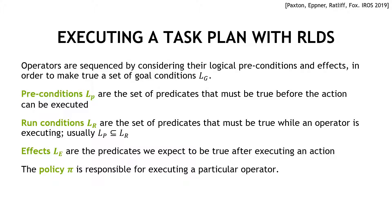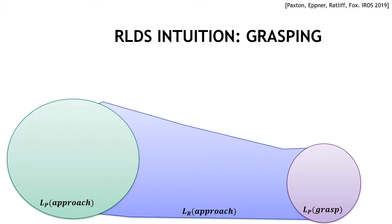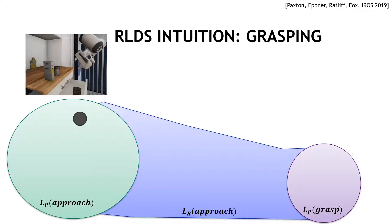In our case, we provided a set of policies and their associated conditions. Each volume here represents the set of continuous world values associated with a particular set of logical conditions. For example, if we want to grab this sugar box, we might start in the set of preconditions that say we can begin to approach it.